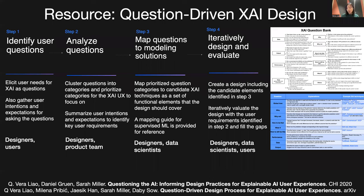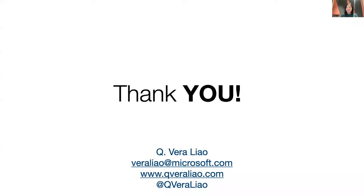Here we also do a shameless plug of our own work on such a user-centered design process — we call it question-driven XAI design. A core idea is to ground user needs for explainability in what kind of questions they ask to understand the AI. You can understand user needs concretely by what kind of questions they ask. In the paper I listed, we also provide a question bank as a reference for common questions users ask about AI systems, and a mapping guide between these questions and popular XAI techniques, which can support collaborative technical choices with data scientists. I hope you will find them useful. With that, I'd like to thank you for your attention — this is the end of my part of the tutorial. Thank you.